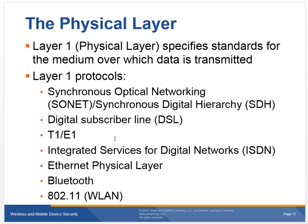The physical layer is where we actually connect to our network — layer one. The physical layer specifies standards for the medium over which it transfers. We have a bunch of different protocols: optical, SONET, synchronous, DSL, ISDN, T1. I had multiple T1s in my house for a long time — now we're all pretty much on broadband. Then we have Ethernet, Bluetooth, and wireless LANs — just all kinds of different ways.